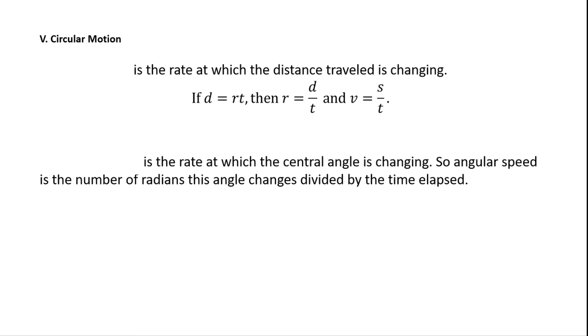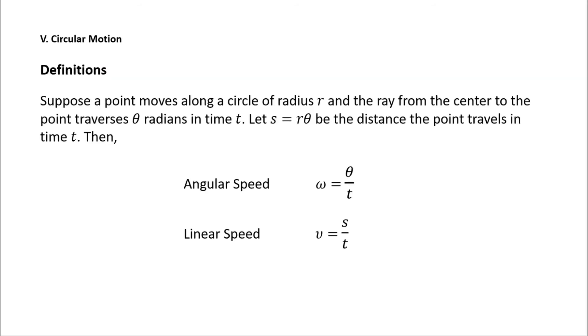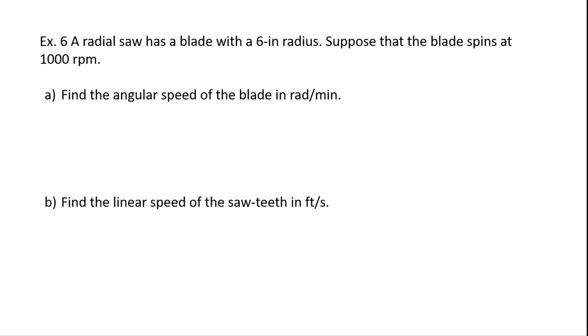Roman numeral 5, circular motion. Linear speed is the rate at which the distance traveled is changing. If distance equals r times t, that's the uniform distance formula, then r is equal to d over t, and v is equal to s over t. Angular speed is the rate at which the central angle is changing. So angular speed is the number of radians this angle changes divided by the time elapsed. Definitions: Suppose a point moves along a circle of radius r, and the ray from the center to the point traverses θ radians in time t. Let s equal rθ, the arc length, be the distance the point travels in time t. Then angular speed is equal to ω is equal to θ over t, and linear speed is v equals s over t.